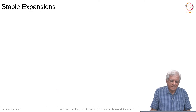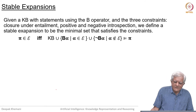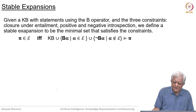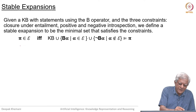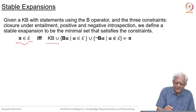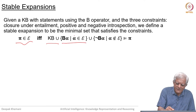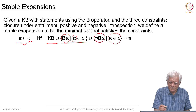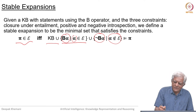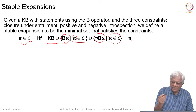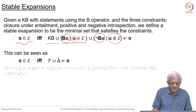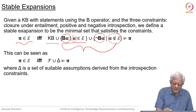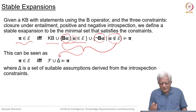We can talk about stable expansions as follows: given a knowledge base with statements using the belief operator and the three constraints — closure under entailment, positive and negative introspection — we define a stable expansion to be the minimal set that satisfies these constraints. Pi belongs to the expansion if the knowledge base is always there, positive introspection adds B(alpha) for every alpha in the set of beliefs, and negative introspection adds not-B(alpha) for every alpha not in the set of beliefs. If you add all these things to the knowledge base and can derive pi, then you can put it in the set of beliefs. This whole thing can be seen as delta — the set of assumptions — but this time the assumptions come from the introspection constraints.